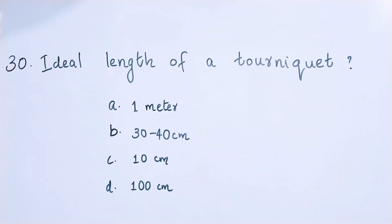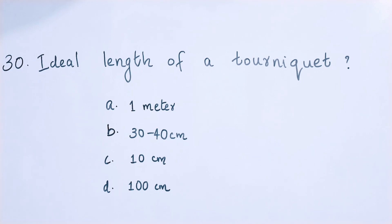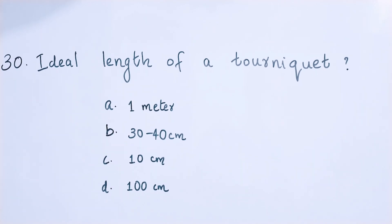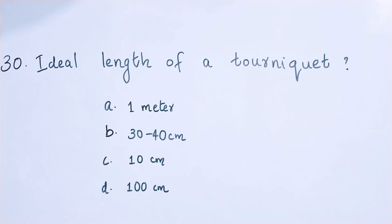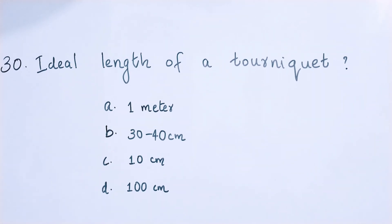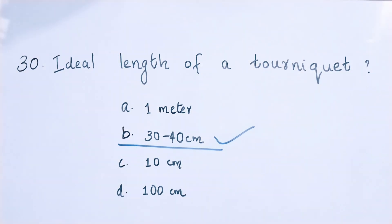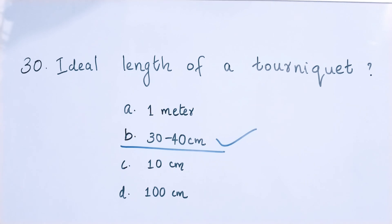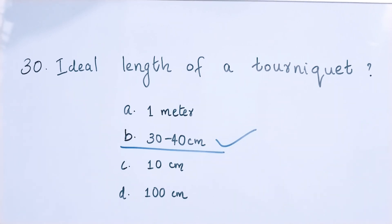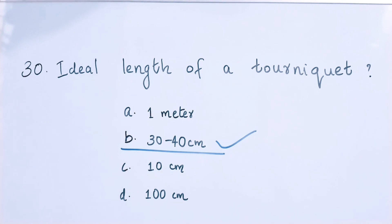Question number 30: Ideal length of a tourniquet — option A: 1 meter, option B: 30 to 40 centimeters, option C: 10 centimeters, option D: 100 centimeters. The right answer is option B — 30 to 40 centimeters is the ideal length of a tourniquet.